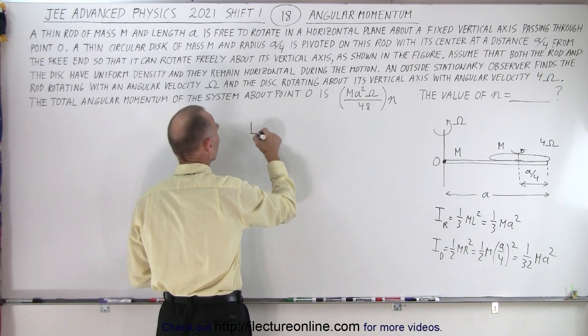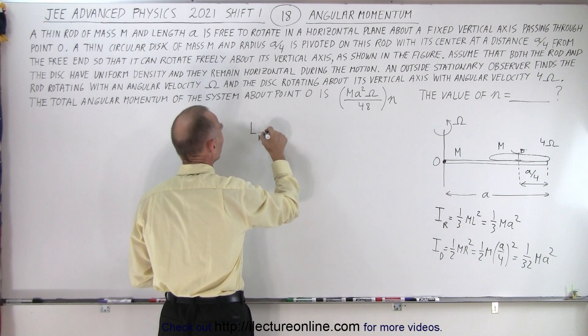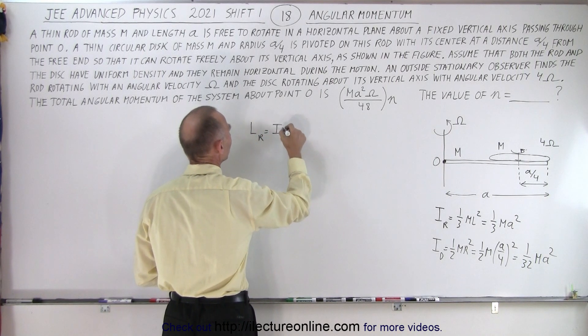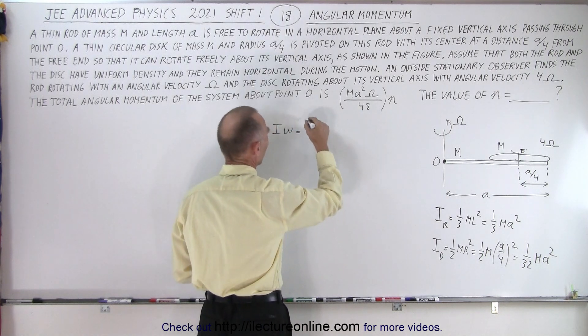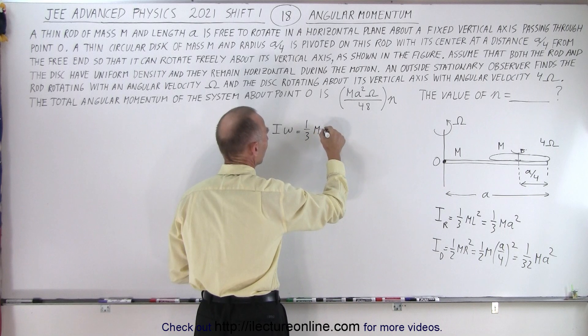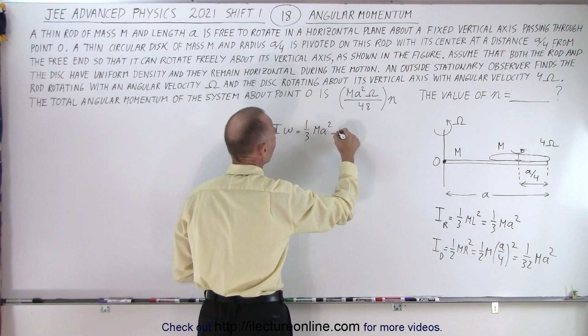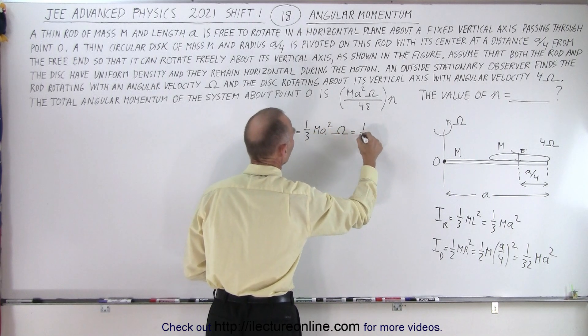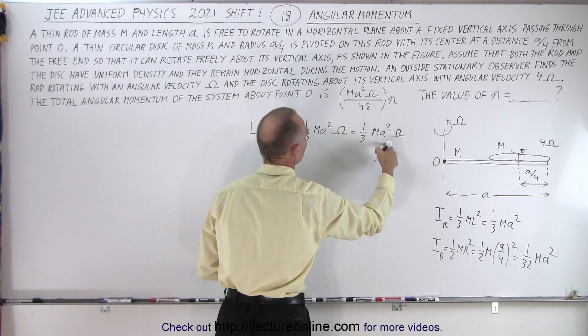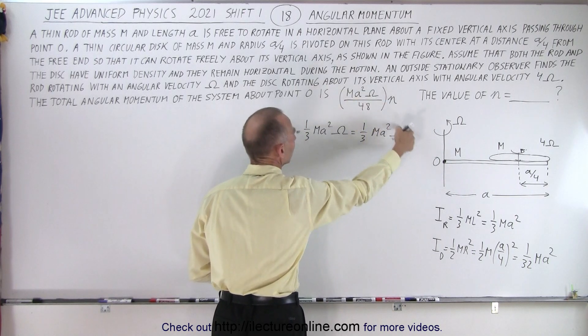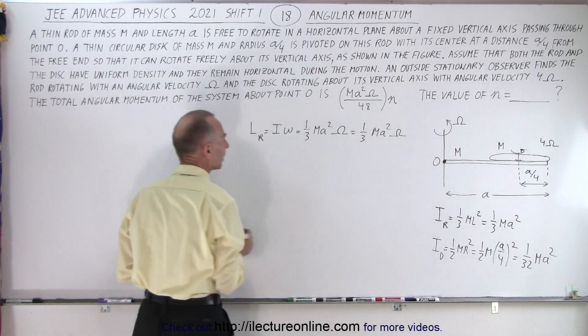So first of all, the angular momentum of the rod which is equal to i times omega. So in this case, this is equal to 1 third m a squared times omega. So this is equal to 1 third m a squared omega. So notice we have m a squared omega in the numerator which is what we have there times 1 third.